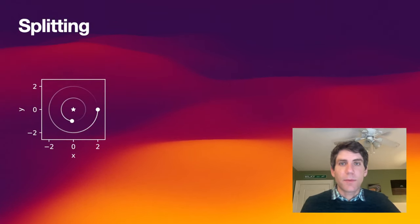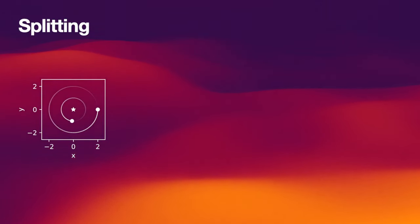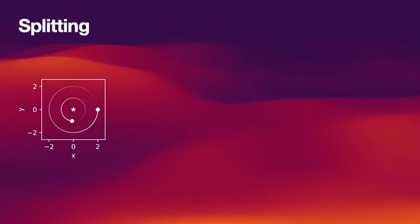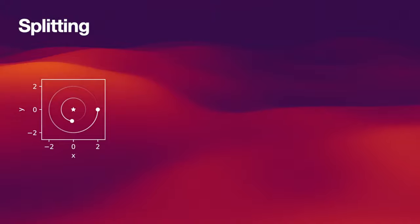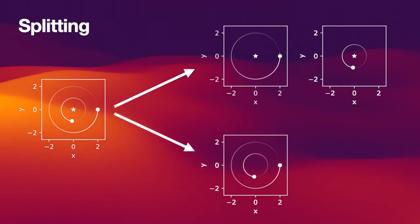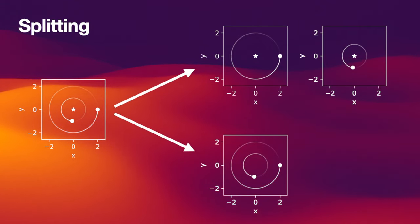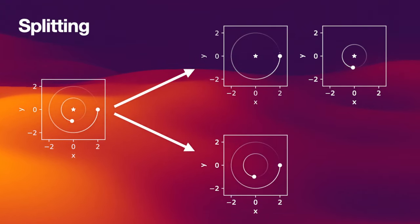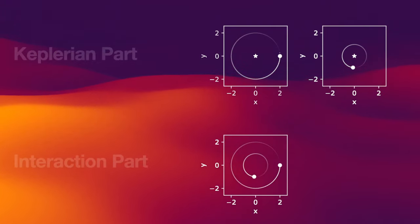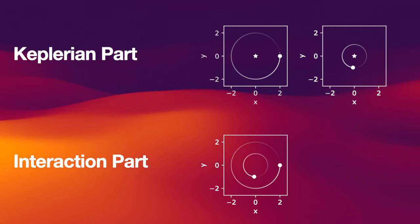In today's video I want to talk about the basics. Assume we have a planetary system consisting of two planets orbiting a central object. The idea behind the Wisdom-Holman integrator is to split this problem into simpler problems — specifically, splitting the two planetary orbits into two Keplerian orbits just orbiting the single star, and then the planet-planet interactions are treated separately. The top part is called the Keplerian part of the problem, and the bottom part is called the interaction part of the problem.